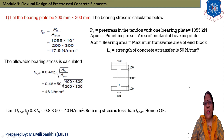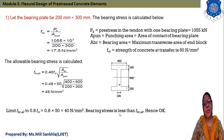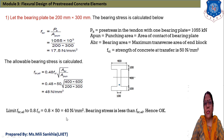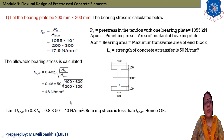We now compare the allowable bearing stress with its upper limit of 0.8 × fci = 0.8 × 50 = 40 N/mm². Since FBR (48 N/mm²) exceeds this limit, we use 40 N/mm² as the allowable bearing stress. Comparing with the actual bearing stress of 17.5 N/mm², which is less than 40 N/mm², the size of the bearing plate is acceptable.